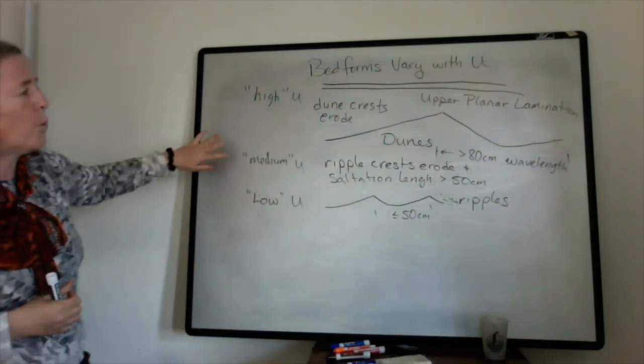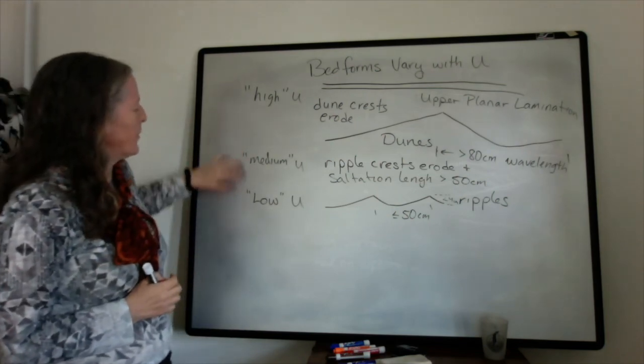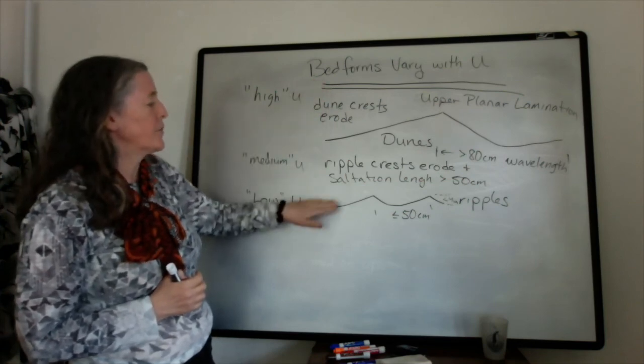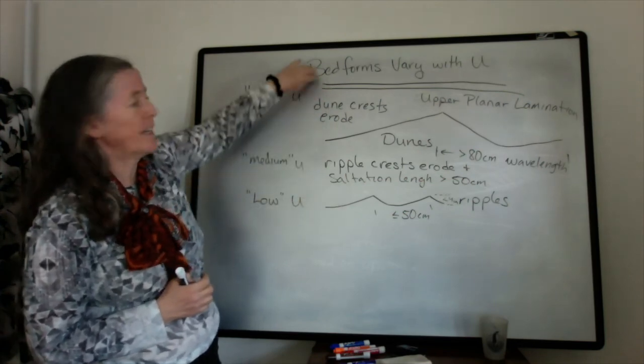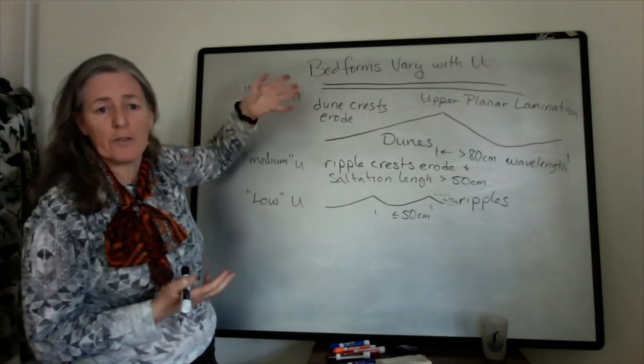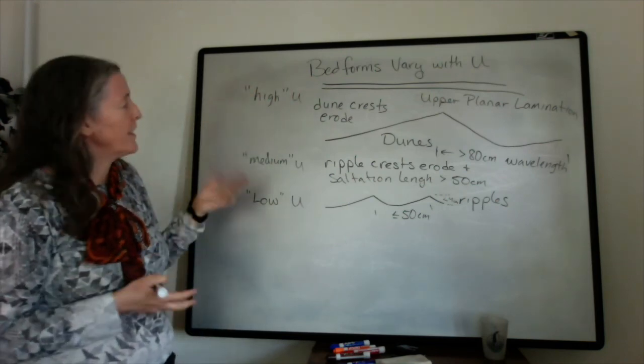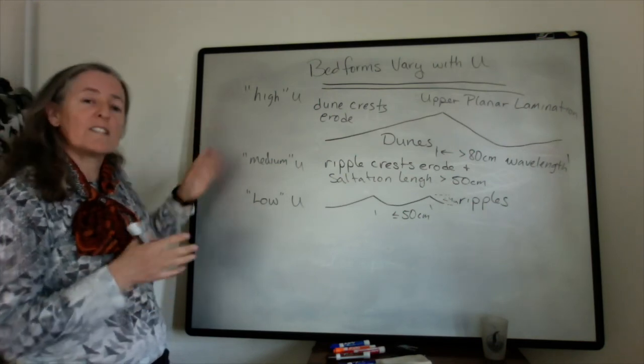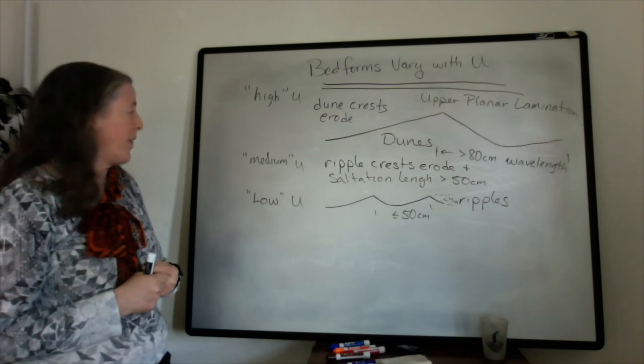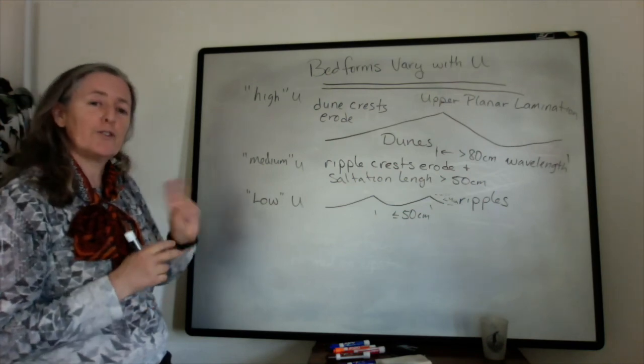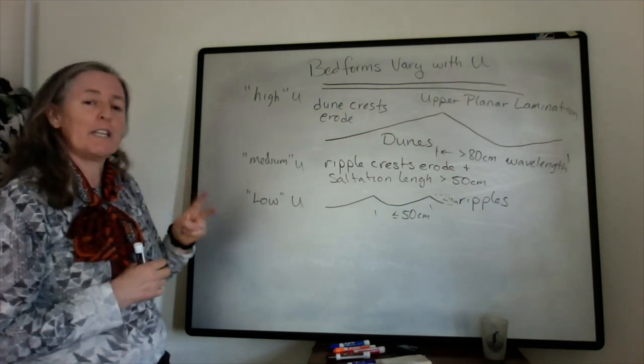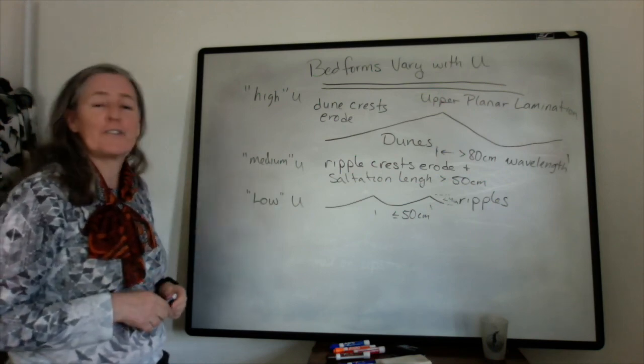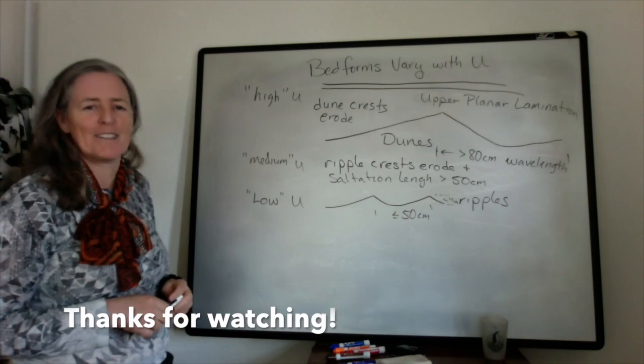So one of the really nice things about this is that as flow speed changes, we get different bed forms that give us different cross lamination, cross stratification, planar lamination in the rocks. And so we can use the geometry of the layers in the rocks to tell us about flow speed. So that works in addition to the grain size variations with flow speed. And so we have two indicators that really help us a lot to interpret the flow from sedimentary deposits and in sedimentary rocks.